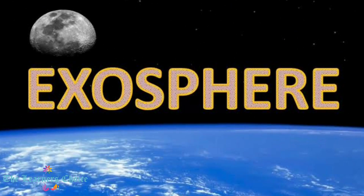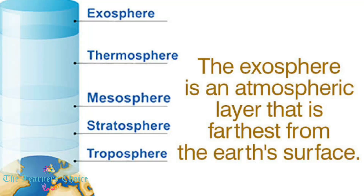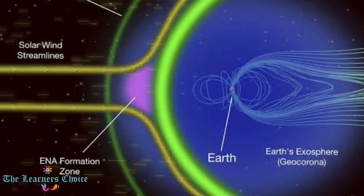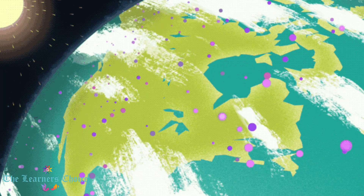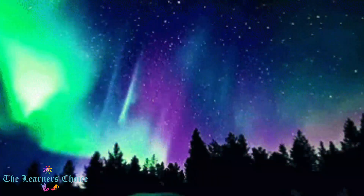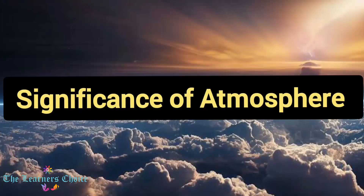Located between about 700 to 100,000 km above Earth's surface, the exosphere is the highest layer of Earth's atmosphere, where its top merges with the solar wind. Molecules found in this layer are of extremely low density and escape into space. While there is no weather in the exosphere, auroras are sometimes seen in the lowest part.